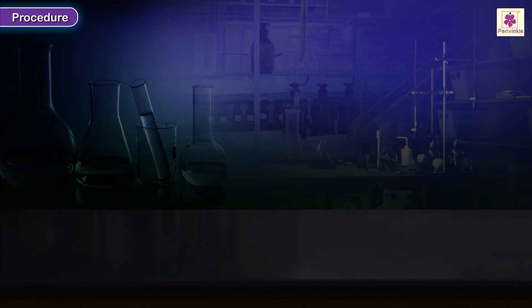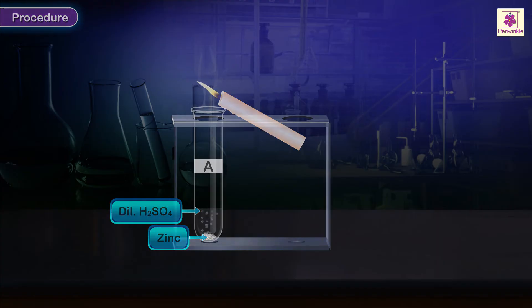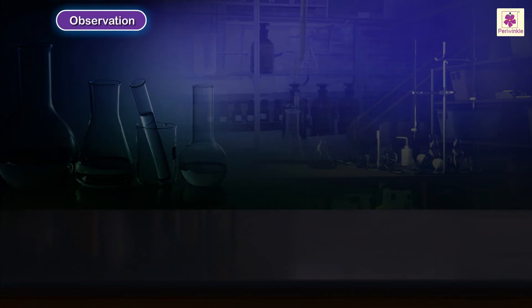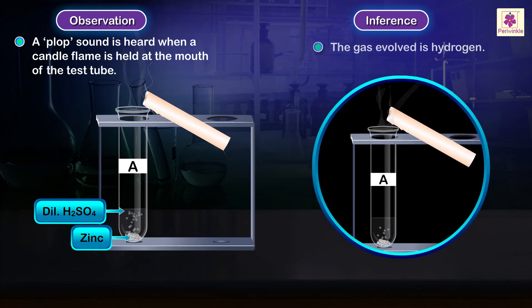Procedure: Hold the flame of a burning candle at its mouth and observe the effect. Observation: A pop sound is heard when a candle flame is held at the mouth of the test tube. Inference: The gas evolved is hydrogen.